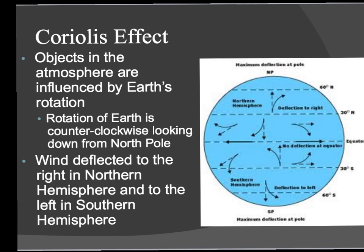The Coriolis effect is something that happens because our Earth rotates or spins on its axis. So things in the atmosphere — winds, planes, anything like that — are influenced by this Earth's rotation. If we're looking down on the Earth from the North Pole, the rotation of the Earth is counterclockwise. That causes winds in the northern hemisphere to be deflected to the right of their intended pathway. It's a mirror image in the southern hemisphere, so winds are deflected to the left there.